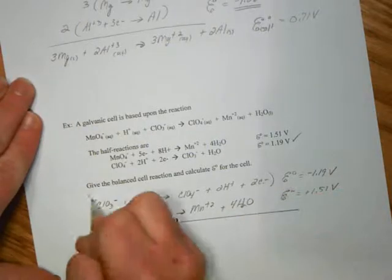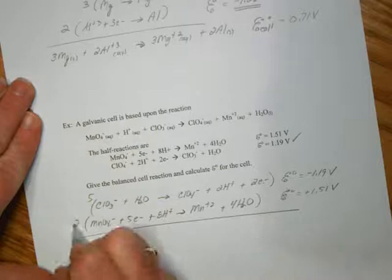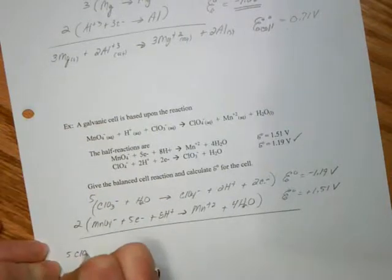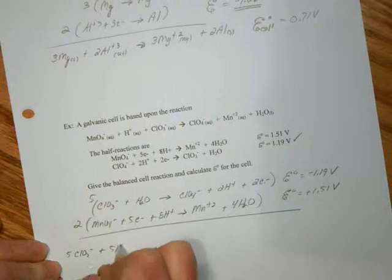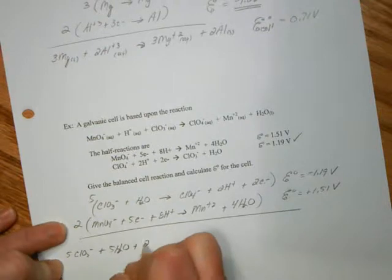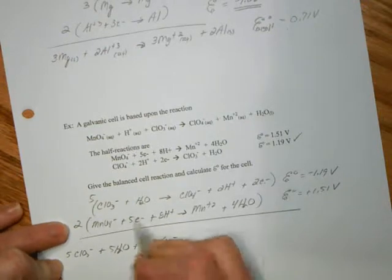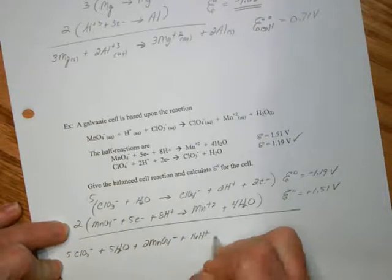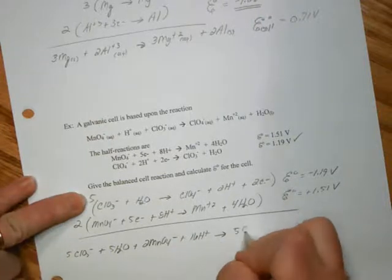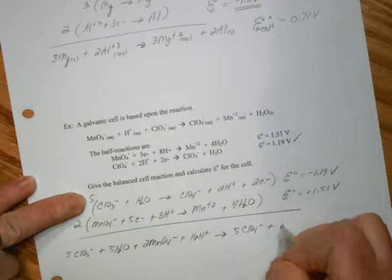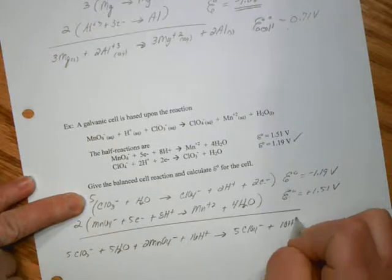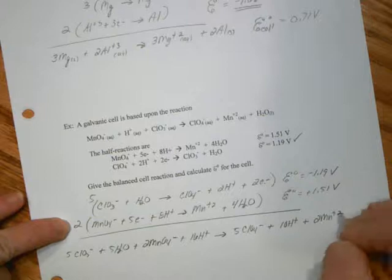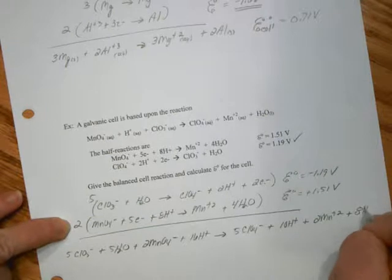So I need to multiply this through by five, this through by two. So I will get five chlorates plus five waters plus two permanganate and ten electrons plus 16 hydrogen ion.